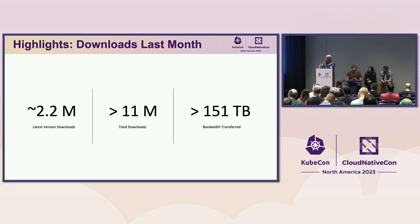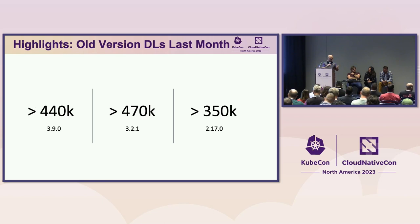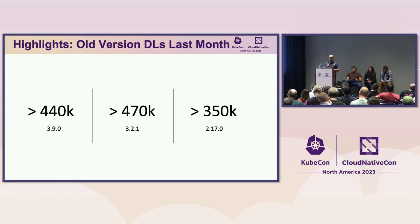If we dig in a little deeper, Helm 3.9, which came out a couple years ago, had over 440,000 downloads. And Helm 3.2.1, which came out years ago, had over 470,000 downloads. These old versions are still being downloaded and used, so when we think about the interfaces around Helm, it matters how people consume it because they're building their CI pipelines around this. Even Helm 2.17, deprecated years ago, still has many users. I'd recommend people not use those old versions because of CVEs in the dependency trees.